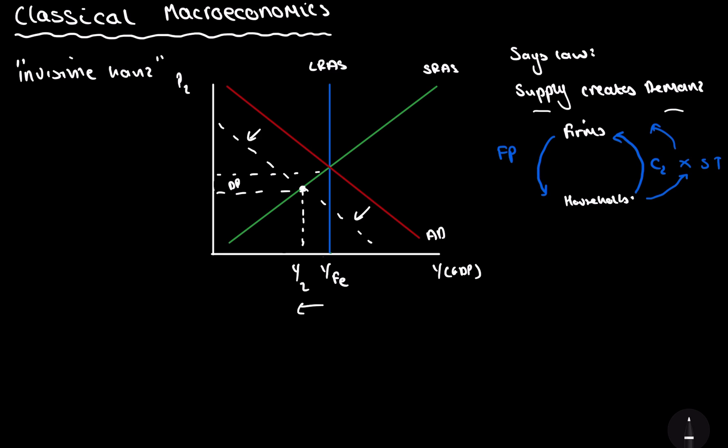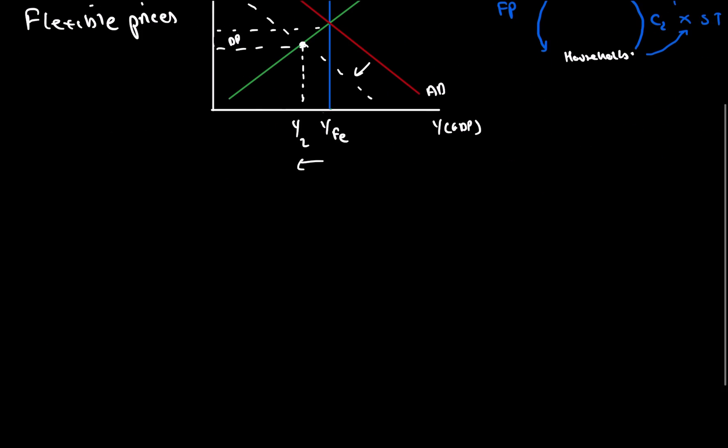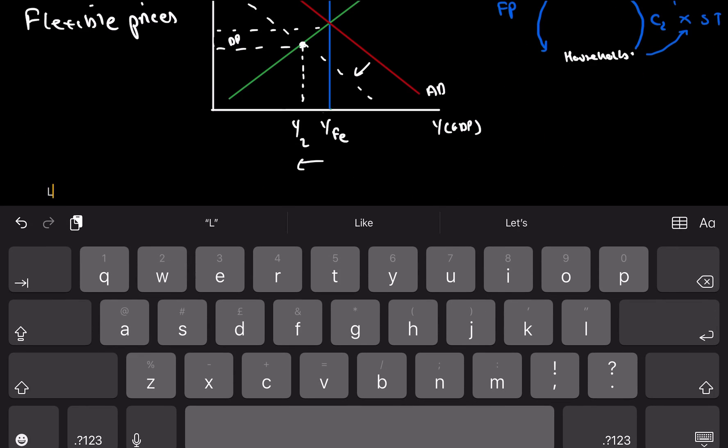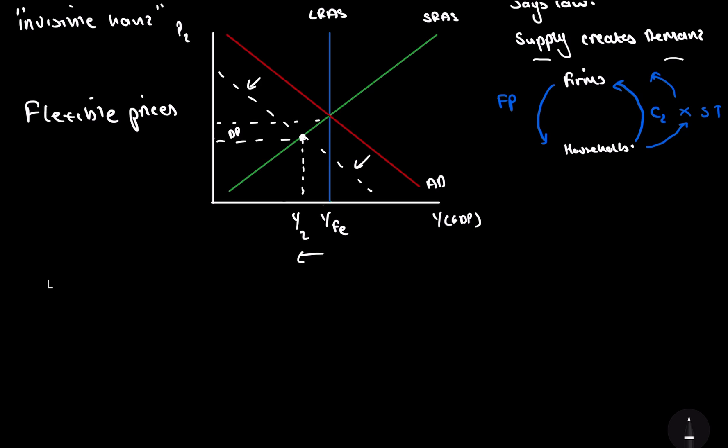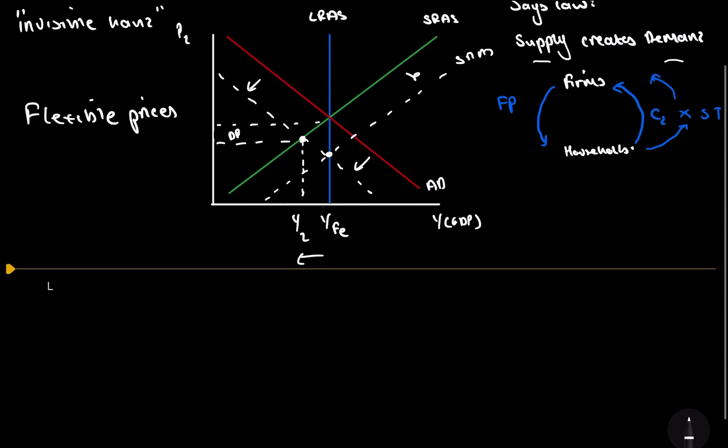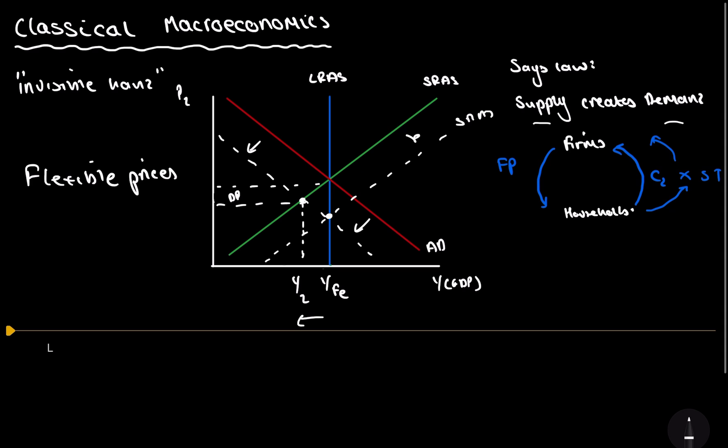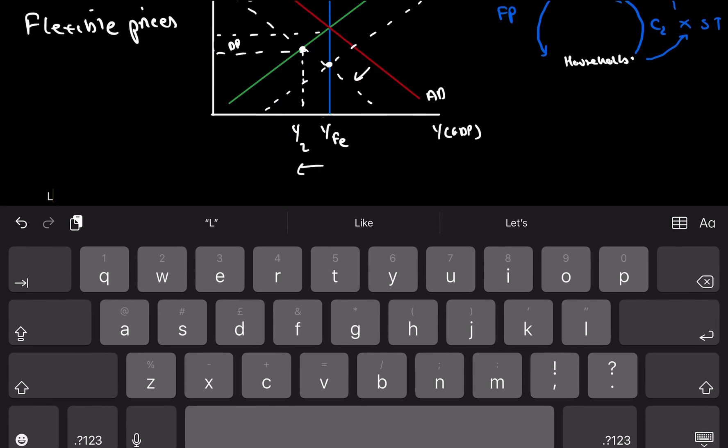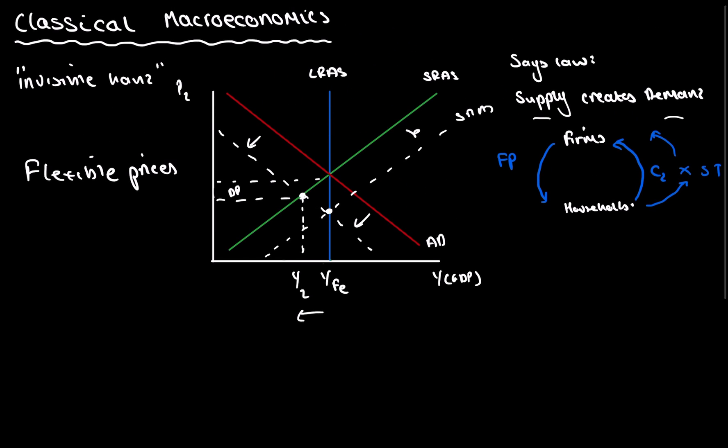And the only way, well, the classical theorists believe that we are always producing on this long-run aggregate supply. And this is because of flexible prices. So essentially, to get back to our long-run aggregate supply, we need to shift aggregate supply, short-run aggregate supply. And this shifts along here, like this. Once this short-run aggregate supply has shifted, we're going to be back to our long-run aggregate supply. As illustrated. And the reason this short-run aggregate supply will shift down is these flexible prices.